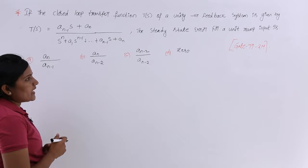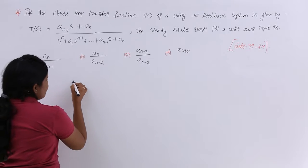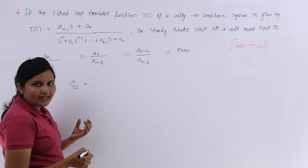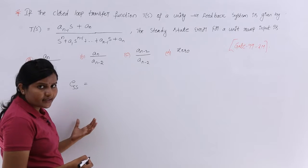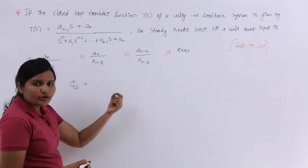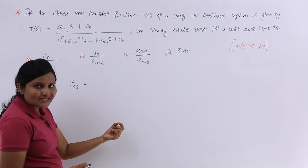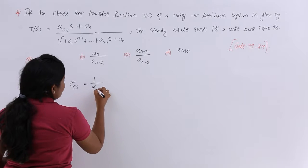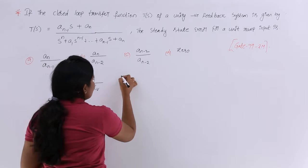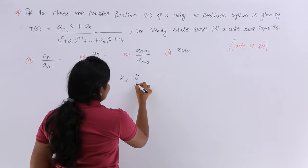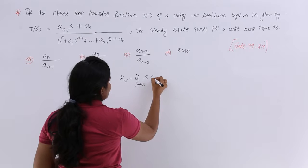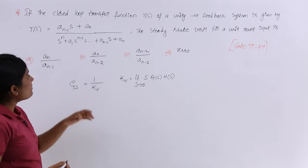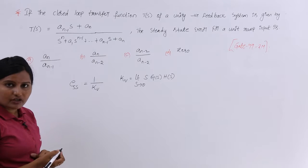To calculate steady state error ESS when the input is unit ramp — also called steady state velocity error — we use the formula 1/Kv. Here, Kv = limit as S tends to 0 of S * G(s) * H(s), where G(s) is the open loop transfer function. However, they have given the closed loop transfer function T(s).